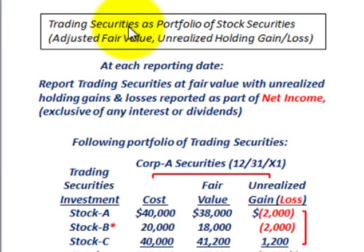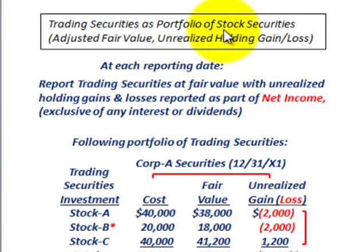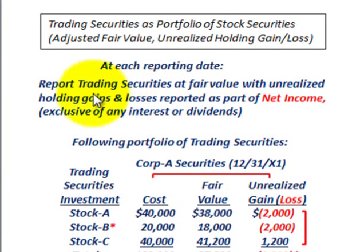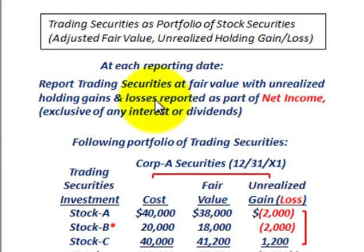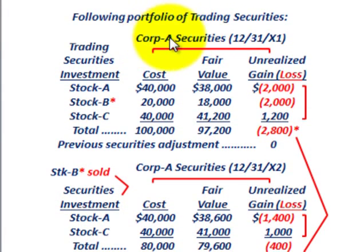We're going to be looking at trading securities as a portfolio of stock securities. We'll look at the adjusted fair value and the unrealized holding gains or losses on this portfolio. At each reporting date, you report the trading securities at their fair value with any unrealized holding gains or losses reported as part of net income, exclusive of any interest or dividends, which have to be accounted for separately.